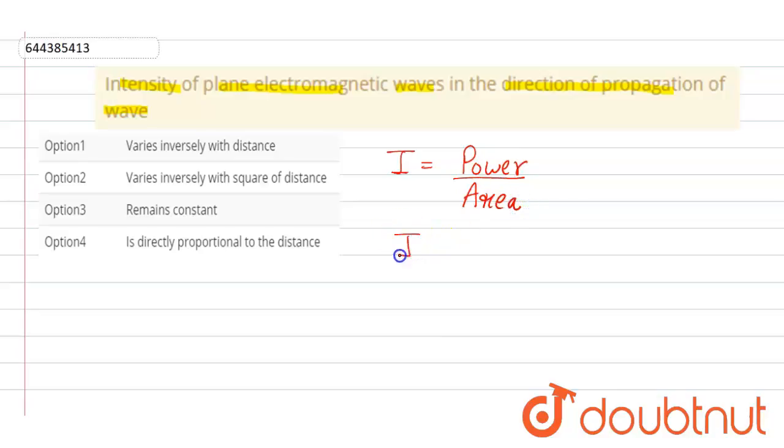Now, power can be written as energy upon time, so it will be energy upon time into area. We know that energy is represented in the form of electric and magnetic field for electromagnetic waves.